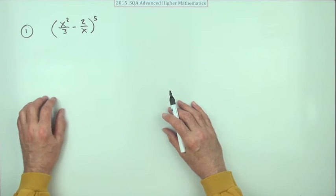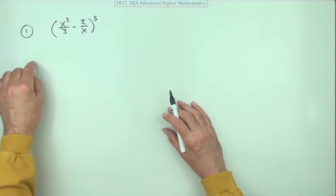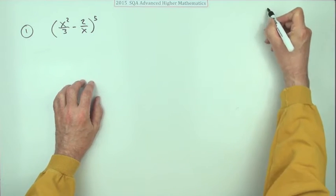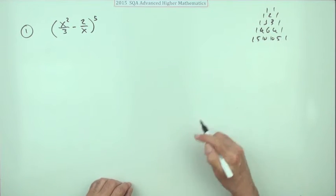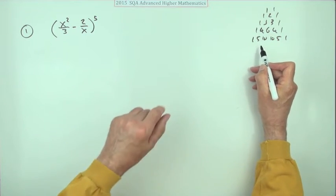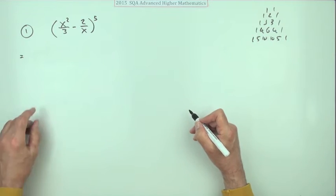Another thing that you notice from this marking scheme and other ones is they don't seem to indicate you're going straight in with the binomial coefficients just picking it out from Pascal's triangle. They seem to want you to put the whole lot in, so put down the combinations for the binomial coefficients.